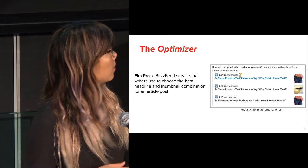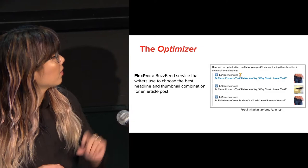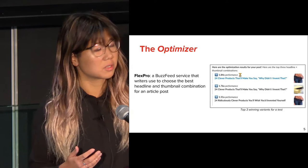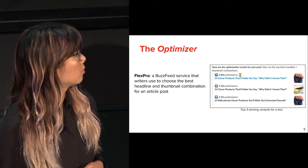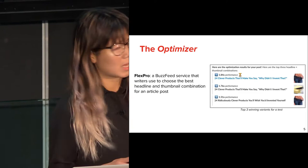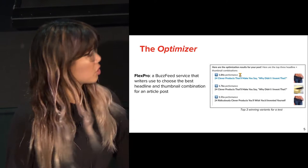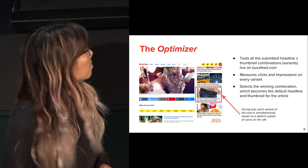Here's an example of what those variants might look like — three of nine of them. For instance, a shopping article about '24 clever products — I'll make you say why didn't I invent that?' and another variant: '24 ridiculously clever products you'd wish you invented yourself.' One thumbnail is someone grabbing their jeans, another is someone slicing a block of butter. The jeans one prevailed. This test is run on every single post written at BuzzFeed.